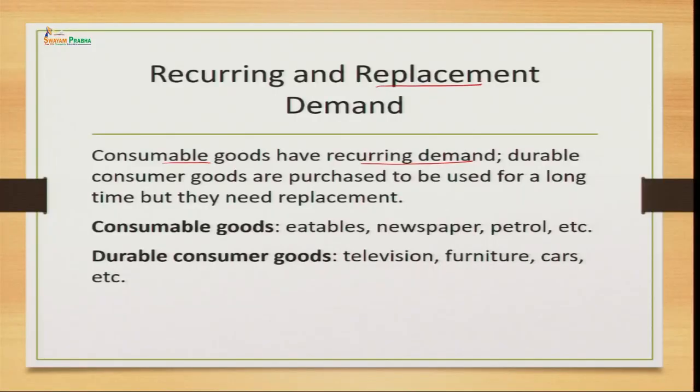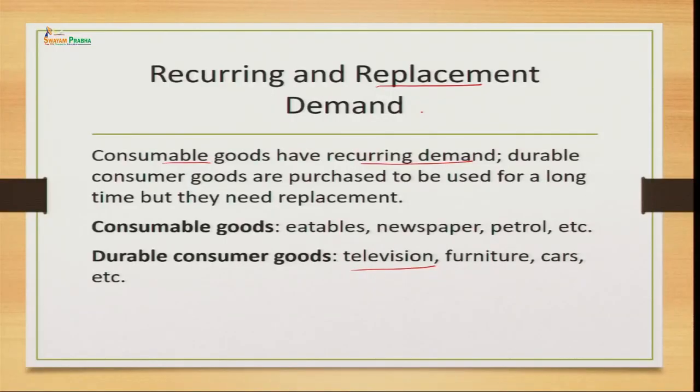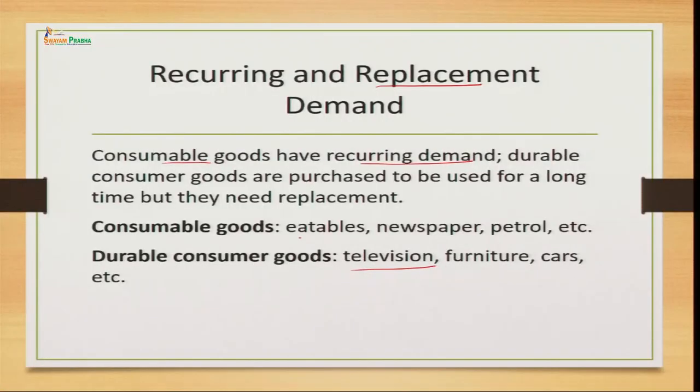Replacement demand is the demand for durable consumer goods which are kept for a longer period of time. If you have purchased a television, you are not going to demand another the next day or after a week. You use it for a longer period and when technology changes or there is wear and tear, then only you will replace it. So demand for such goods is of replacement demand nature. Consumable goods examples are eatables, newspaper, petrol; durable goods examples are television, furniture, and cars.